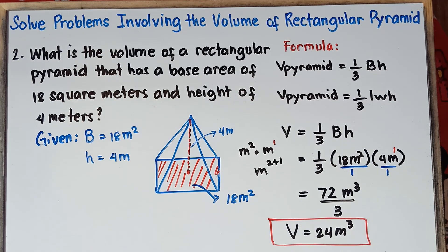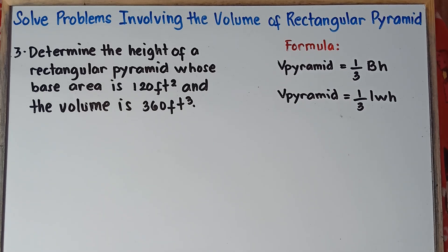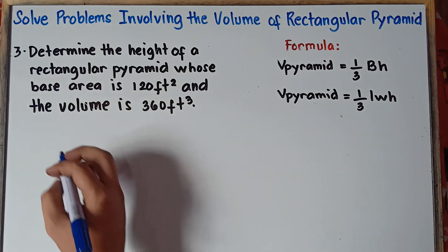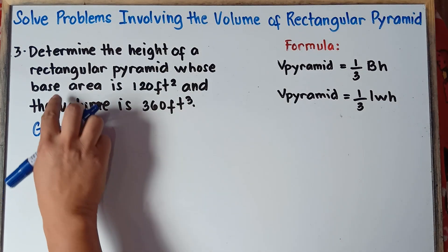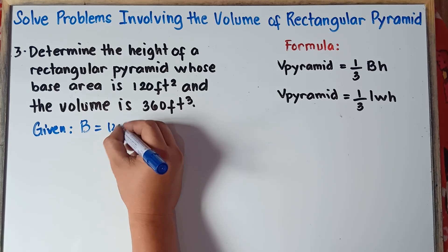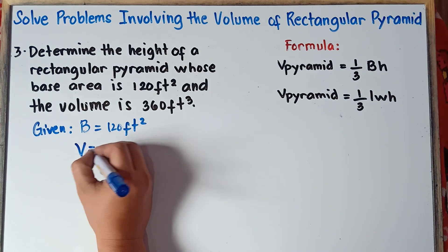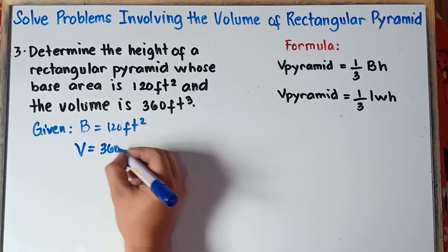What if you're told to find the height? Let's try Example 3 — finding the height. Determine the height of a rectangular pyramid whose base area is 120 square feet and the volume is 360 cubic feet. First, write down the given: base area equals 120 square feet, and volume equals 360 cubic feet.